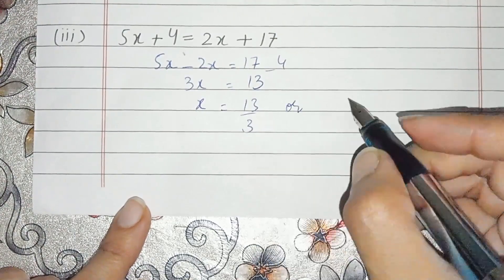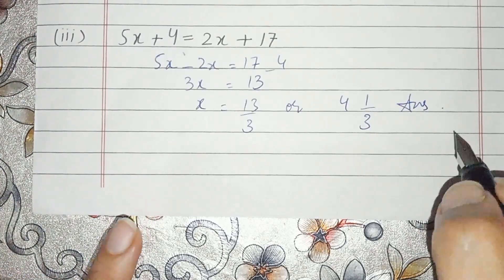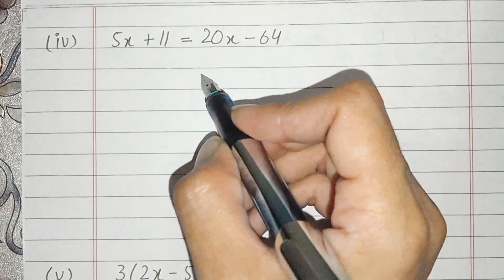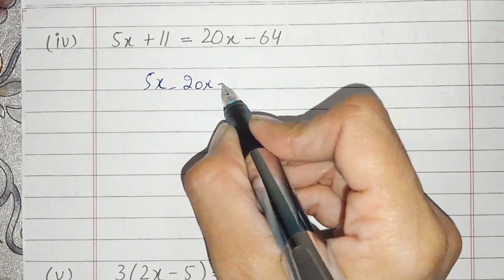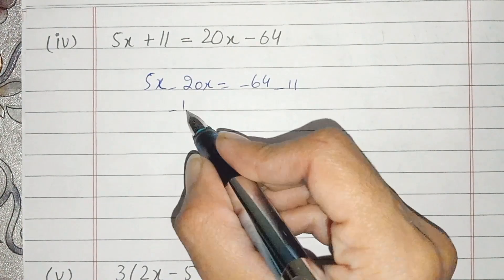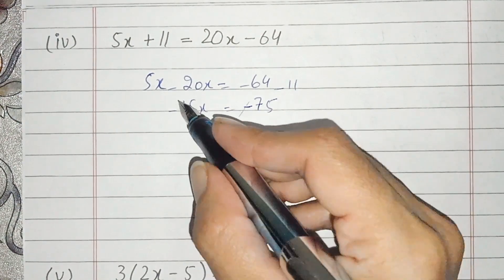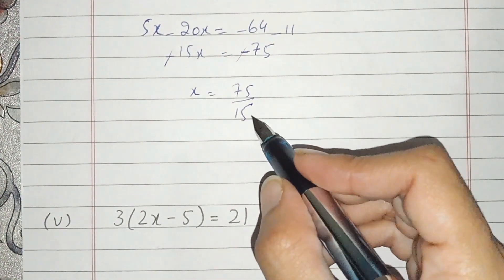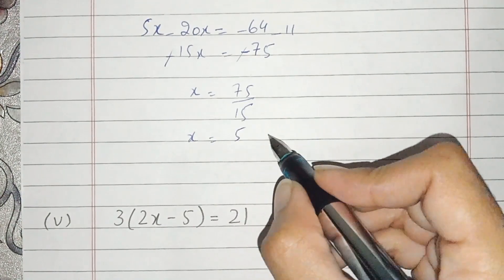We can also write this as a mixed number: 4 times 3 is 12, and 1 over 3. This is the answer of the third part. Now, students, part number 4. We will bring this 12 to this side. We subtract from both sides — they cancel. So we get 5x minus 20x and minus 64 minus 11, which gives minus 15x, and 64 plus 11 we get 75. And x = 75 divided by 15, and we get 5.